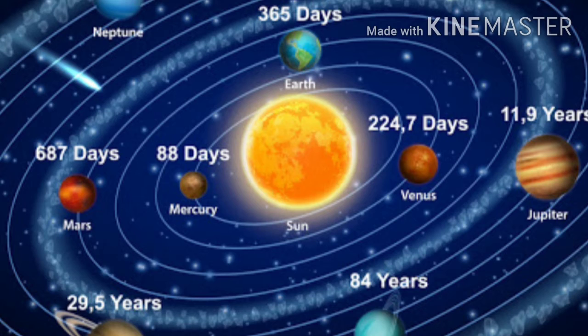See, one more blank is there: all the blank revolve around the Sun. So what revolves around the Sun? Planets revolve around the Sun.